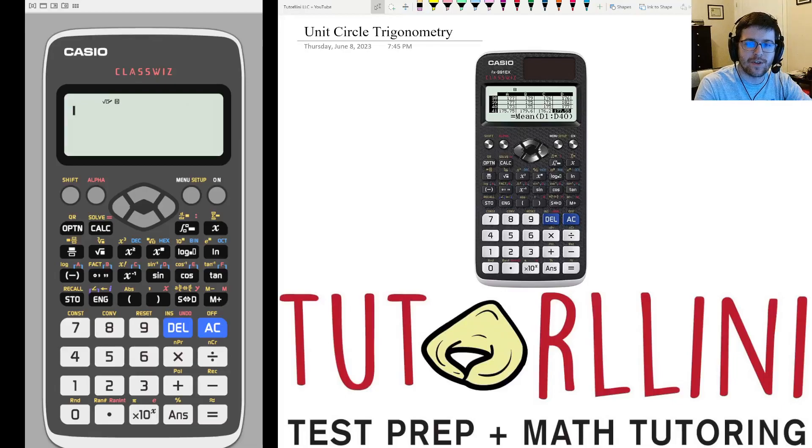Hi everyone, welcome to my channel, Tudorini Test Prep. Today we'll be going over lesson number four on how to use the Casio FX991EX scientific calculator for the digital SAT math, unit circle trig. Please note that I will only be covering uses where Casio outshines Desmos. I recommend you use Desmos for most questions. Let's get started.